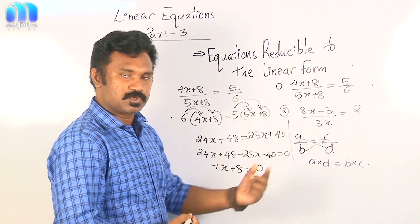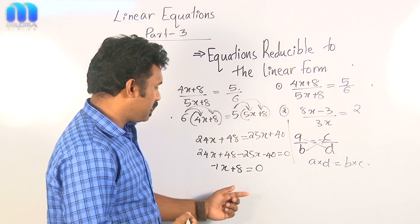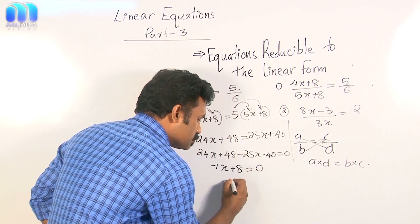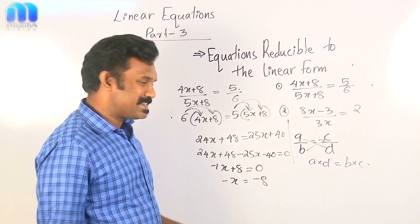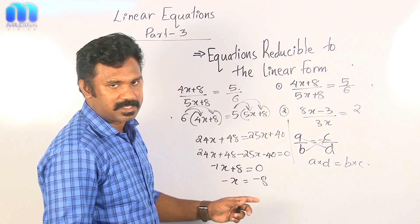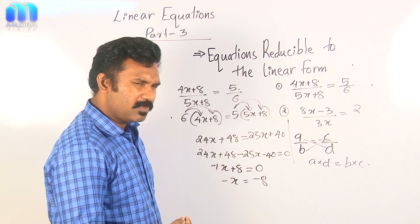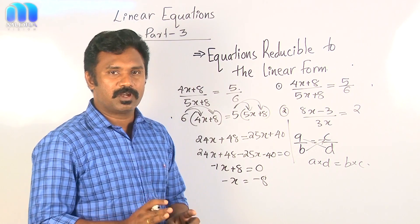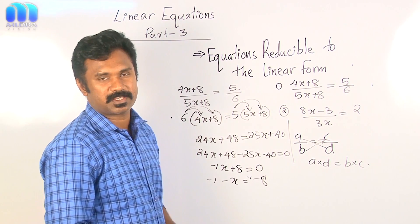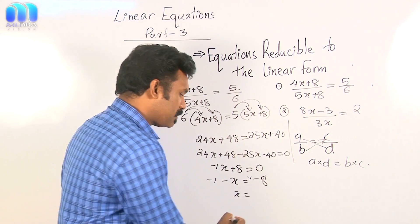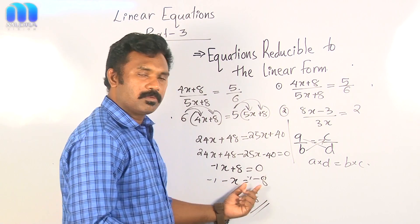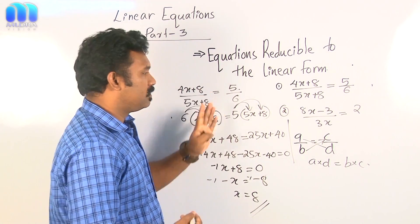So minus x plus 8 equal to 0, which is in the standard form Ax plus B equal to 0. Shifting plus 8 to the right side: minus x equals minus 8. Multiplying both sides by minus 1 gives x equals 8. Therefore x equals 8 is the solution of this equation. It was not in standard form, so I converted it to standard form and then solved it.